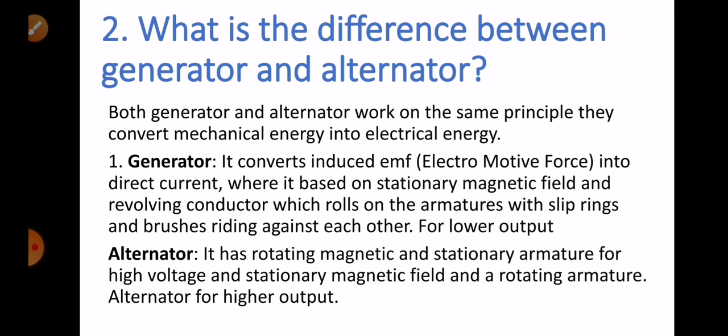Question number two: what is the difference between a generator and an alternator? Both work on the same principle — they convert mechanical energy into electrical energy. However, the generator converts induced EMF into direct current, based on a stationary magnetic field and revolving conductor on the armature with slip rings and brushes. This is used for lower output and lower voltage. The alternator uses a rotating magnetic field and stationary armature, and is normally used for high voltage or high output.